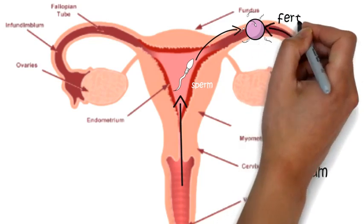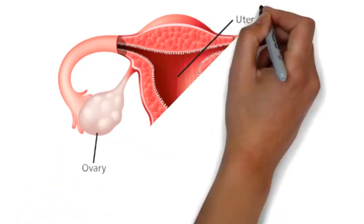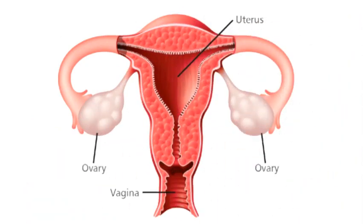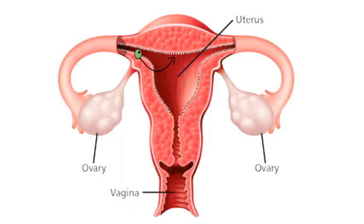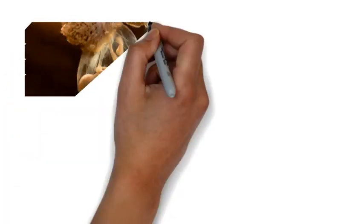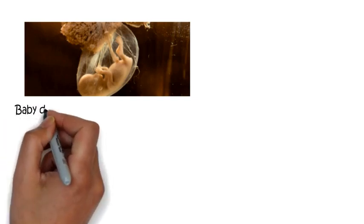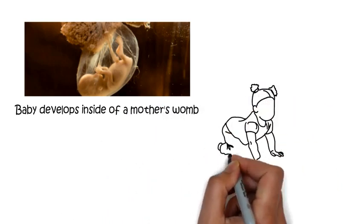After fertilization, a zygote is produced. The zygote comes to the wall of the uterus for implantation and is implanted there, and the baby begins to develop. We have already made a video on how a baby develops inside a mother's body, so don't forget to check that video. This process takes 280 days.